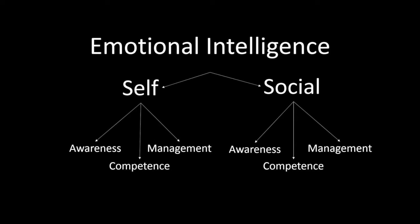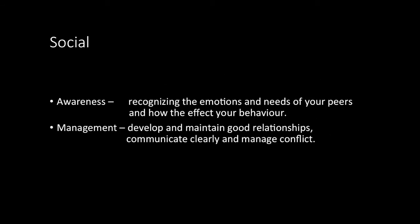Self is the awareness and manipulation of your own emotions, whereas social is the ability to comprehend someone else's emotions, the root of these, and then react accordingly. From there, each of these terms can be broken down into three further categories. Competence governs the awareness and management of emotions.